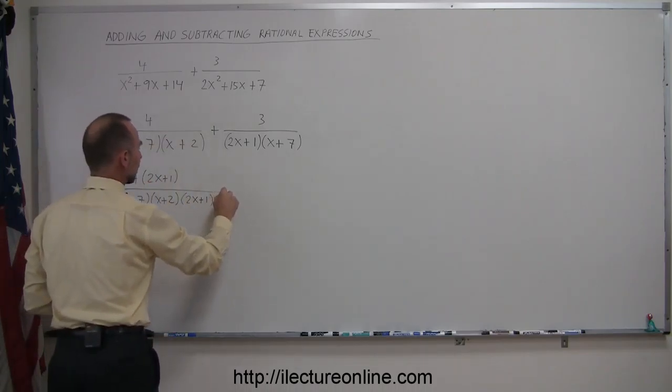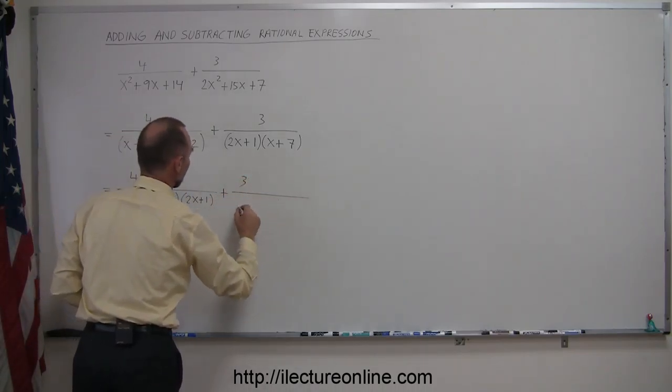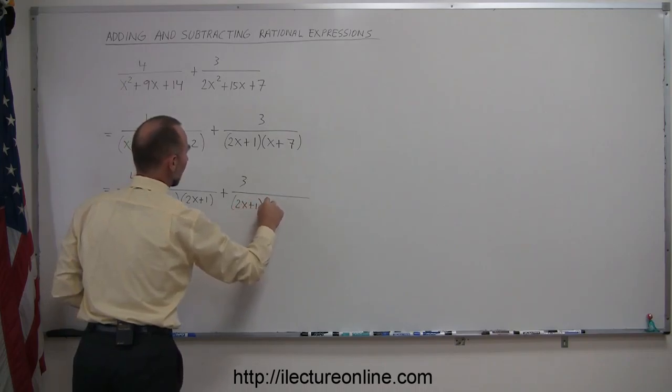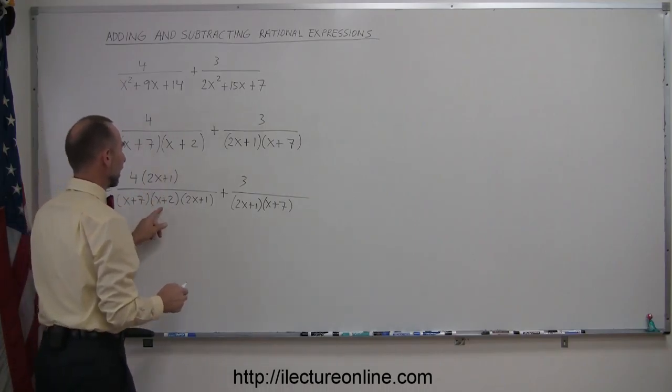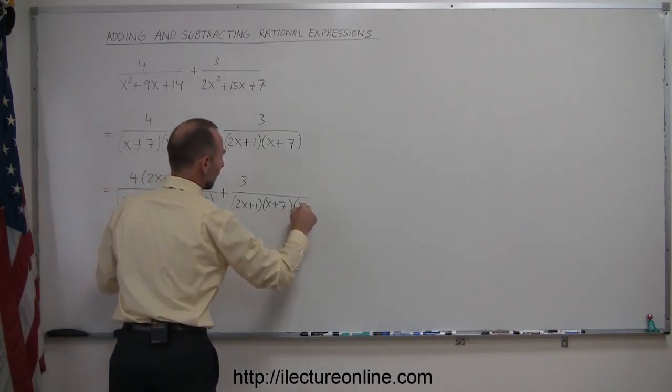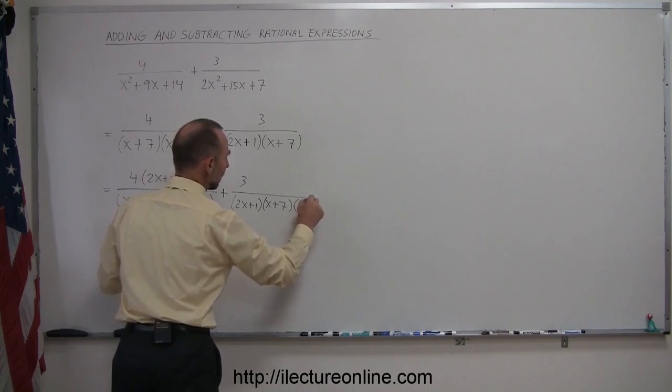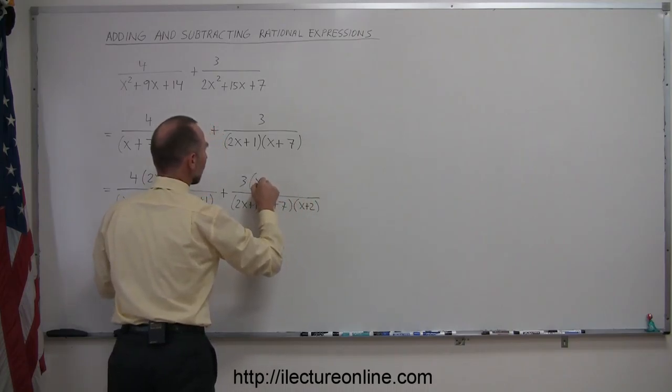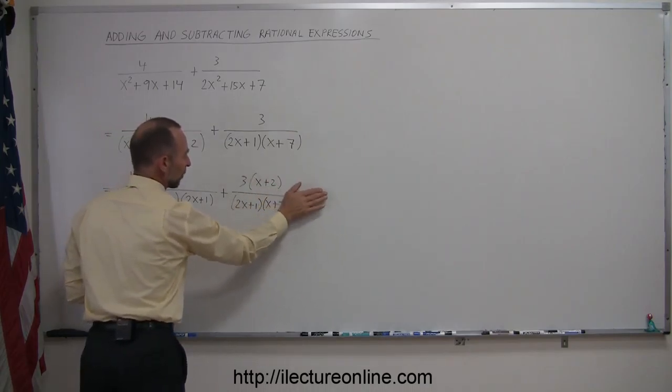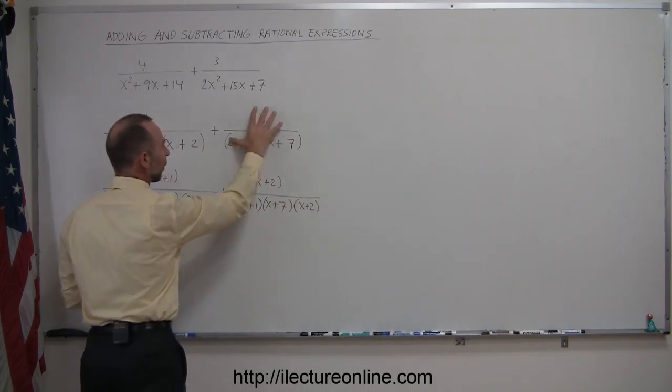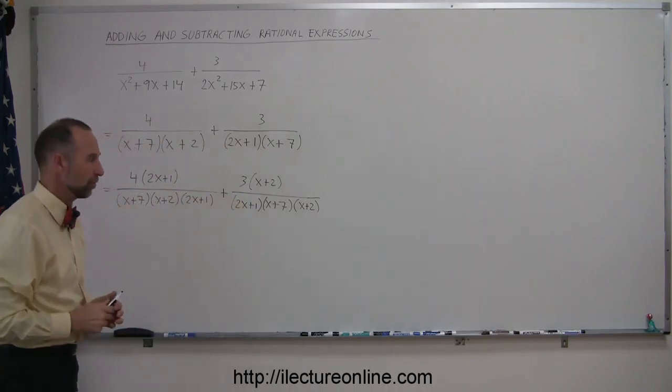On the second fraction here, we have 3 divided by 2x plus 1 times x plus 7, and the part that I don't have is the x plus 2, which the left side has, so I have to multiply the right side by x plus 2, at least the denominator, and of course, must also multiply the numerator by x plus 2. Again, if I allow that to be cancelled out, if this disappears and that disappears, I end up with what I started with on the right side, so no mistakes.